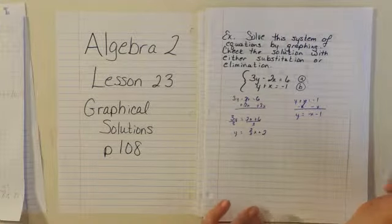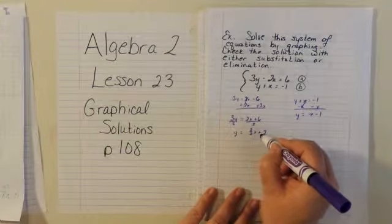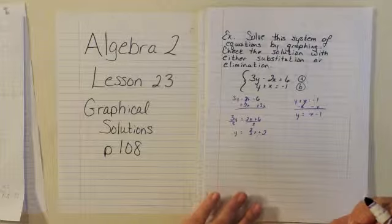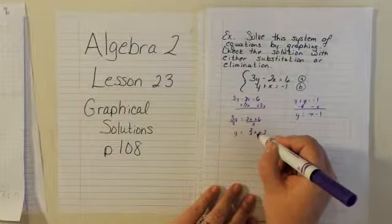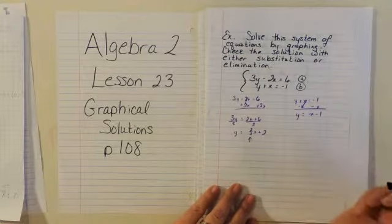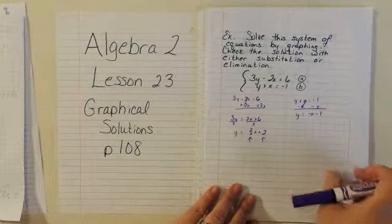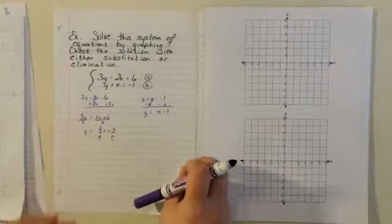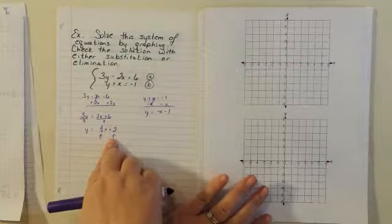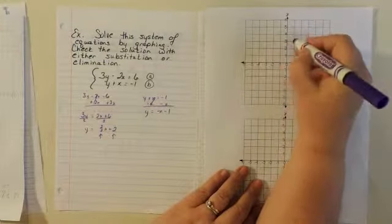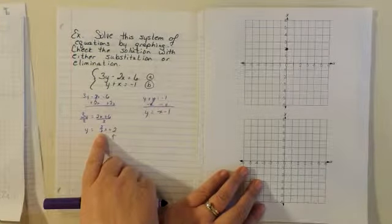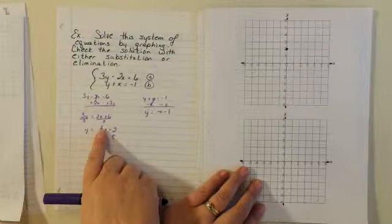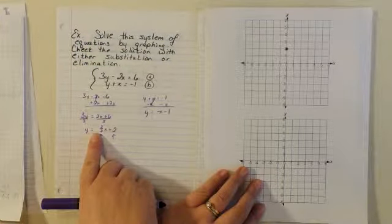For the first line we have y equals 2/3 x plus 2. Remember that slope-intercept form is y equals mx plus b, where m is the slope and b is the y-intercept. So in y equals 2/3 x plus 2, the 2/3 is the slope and the positive 2 is the y-intercept. We're going to start with the y-intercept — that means at x equals 0, y equals 2. So here's going to be our first dot.